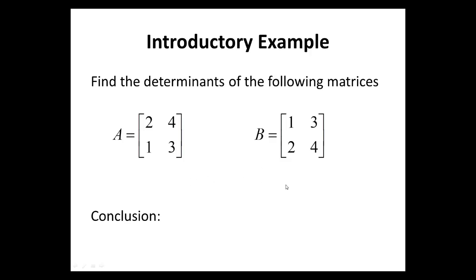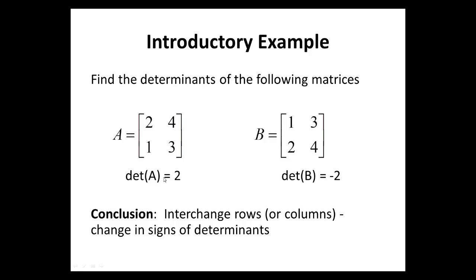Is there any effect on the determinants of A and B considering this elementary operation? The determinant of A here is 2, that is 6 minus 4, and the determinant of B is negative 2. Can we conclude that if we interchange two rows or columns of a matrix, then the only change in the determinants is the sign? That is a question we would answer before the close of this lecture.